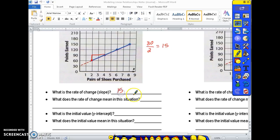So the rate of change is you get 15 points for each pair of shoes that you purchase. Our slope or our rate of change is 15. What does the rate of change mean in this situation? Well it means that you earn 15 points for every pair of shoes that you buy.